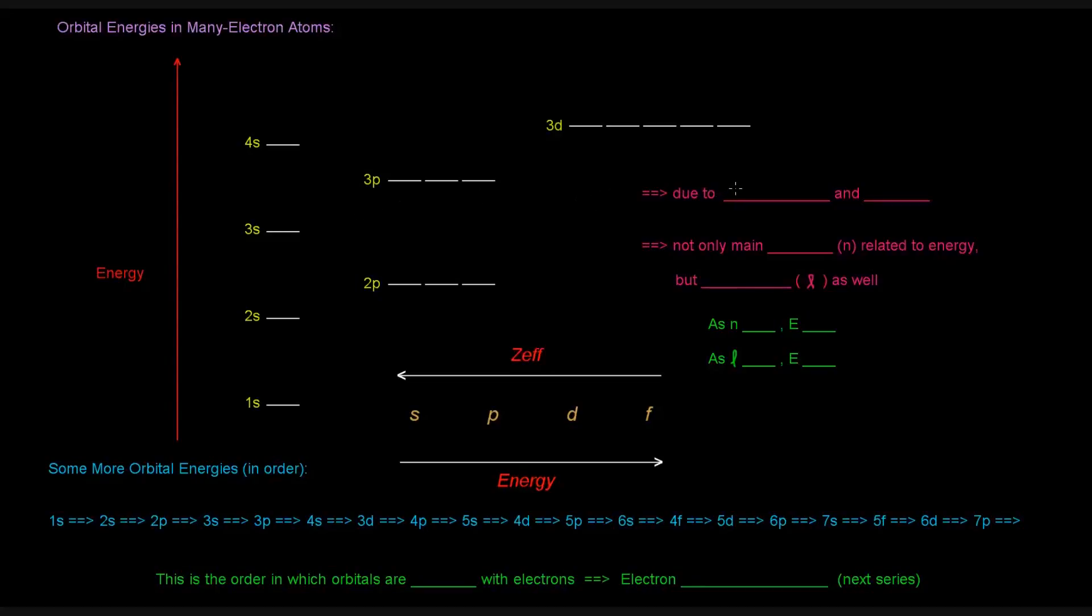The reason for this is due to shielding and effective nuclear charge. So basically what happens here is that not only is the main shell, the principal quantum number or n value related to energy, but the subshell is related to energy as well. We already know that as n increases, the energy of the orbital increases. But in addition to that, as the l value increases, the energy increases as well.